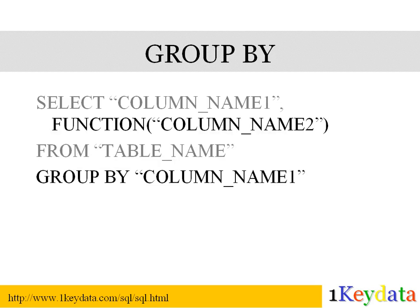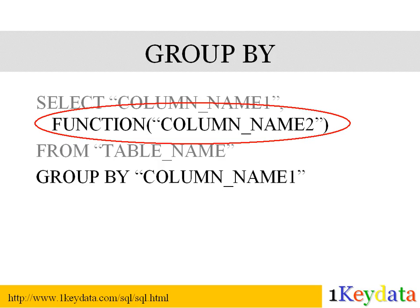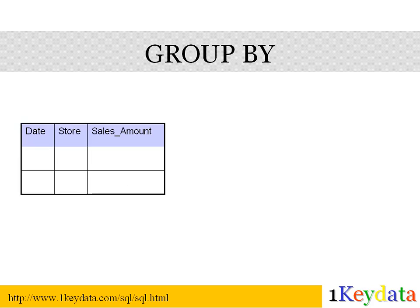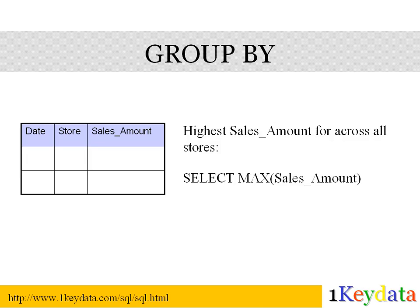Next, we discuss the GROUP BY keyword. Before we go into details about GROUP BY, I'd like to talk first about functions. The typical mathematical functions you see in SQL are SUM, AVERAGE, COUNT, MAX, and MIN. Functions allow us to operate on the values of specific columns. For example, the MAX function allows us to retrieve the largest value in a column. Let's say we have a table that has three columns: date, store, and sales amount. To find out what was the highest sales amount across all dates and all stores, we can simply use SELECT MAX(sales_amount).